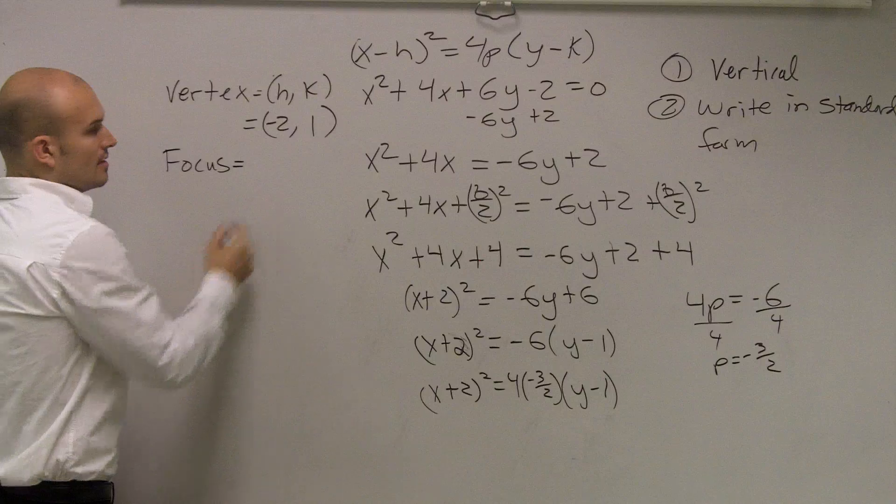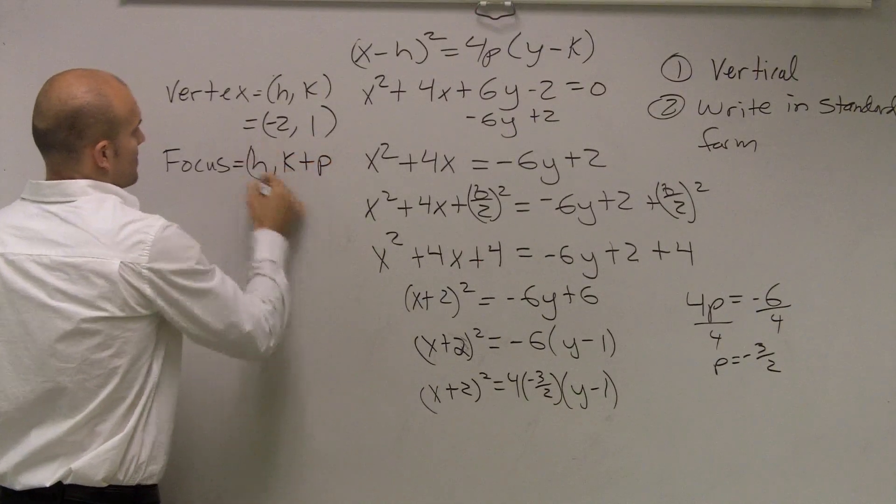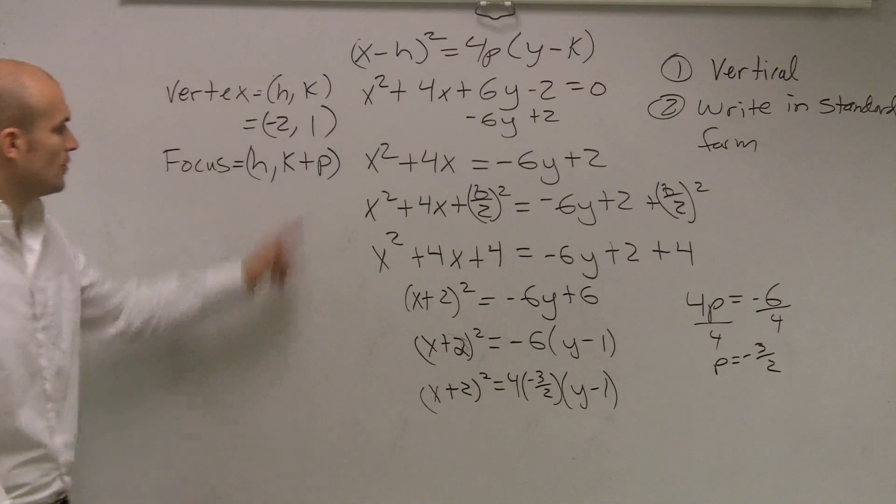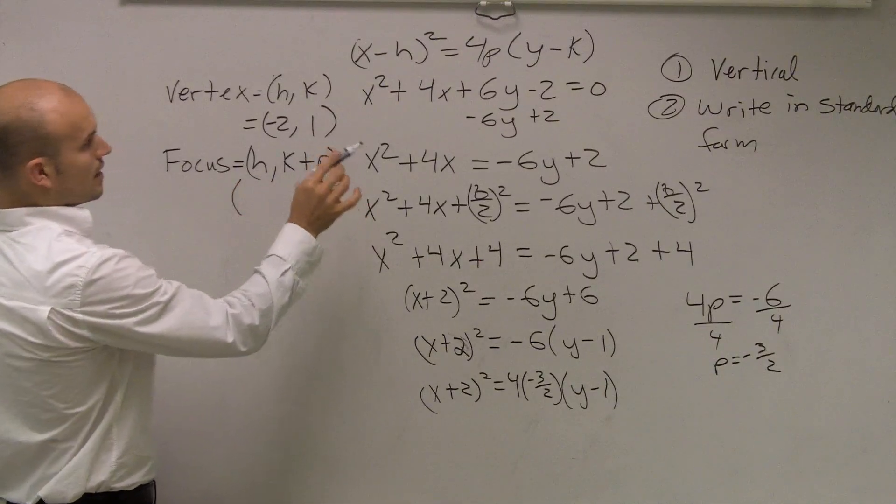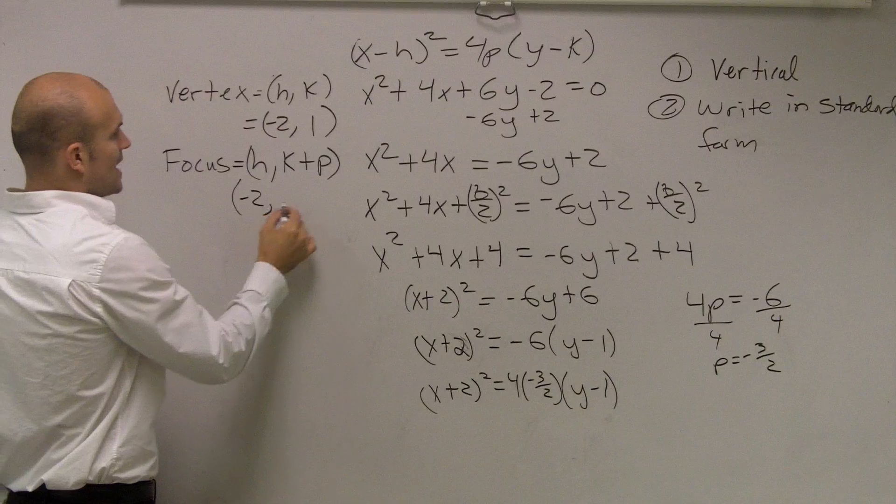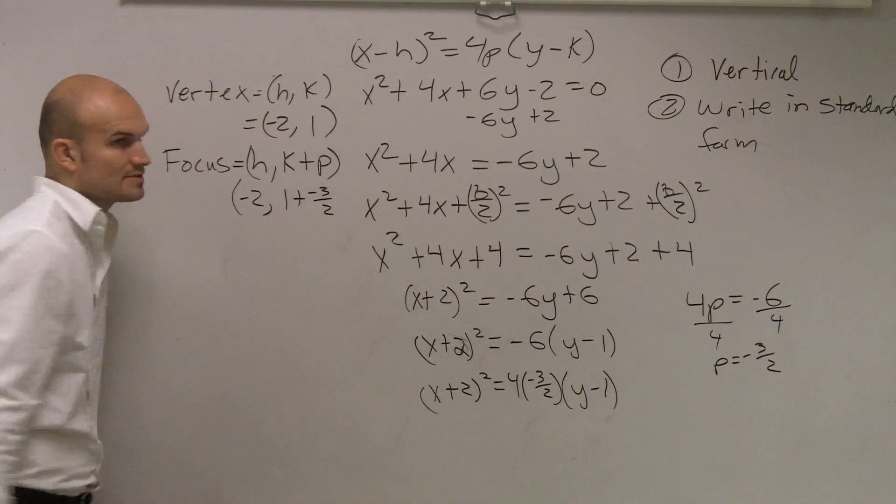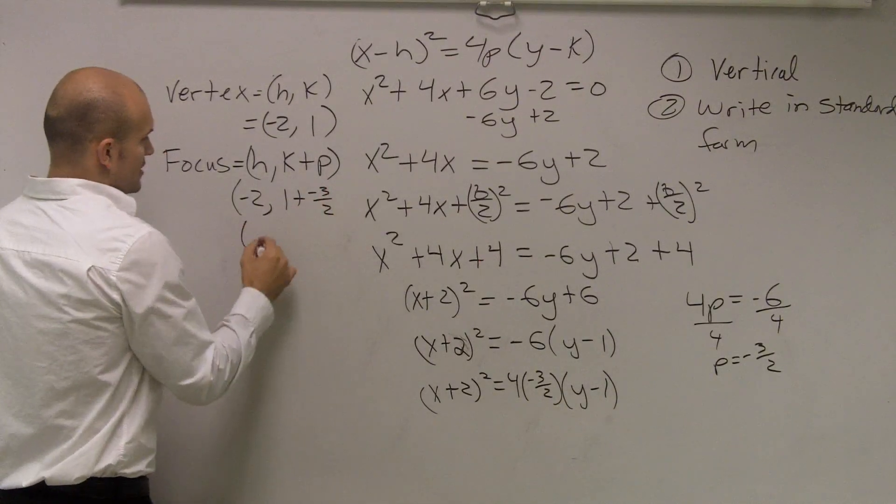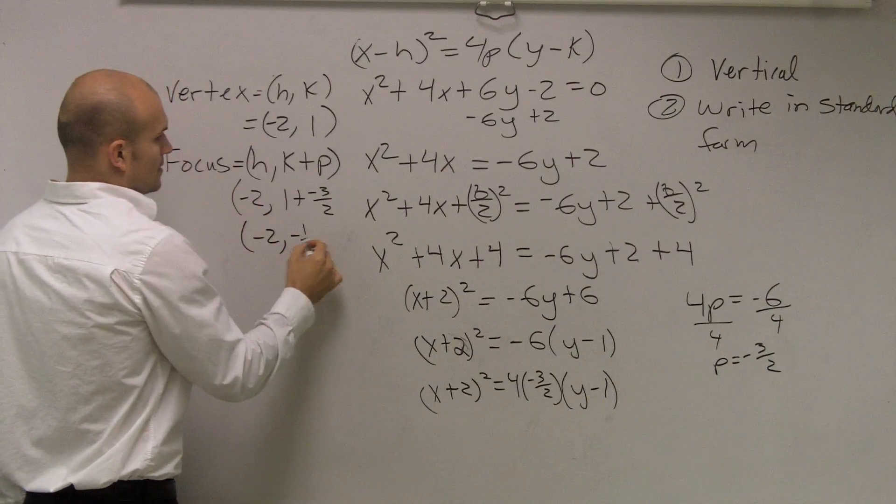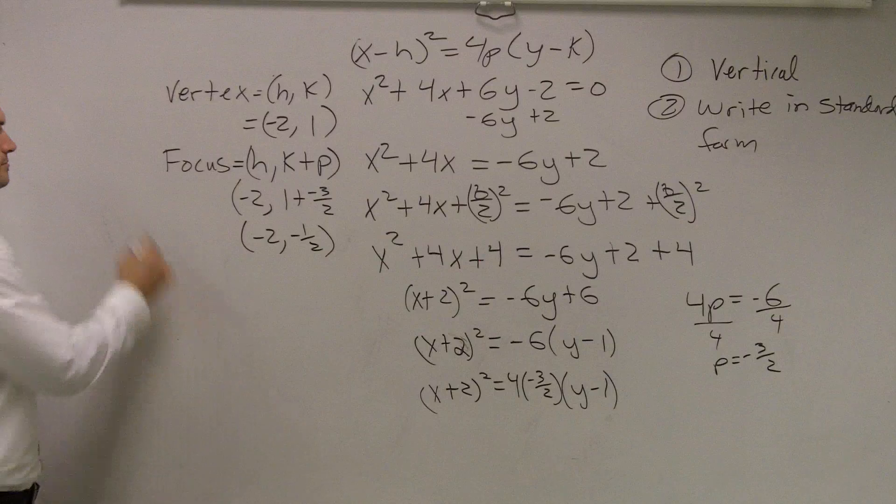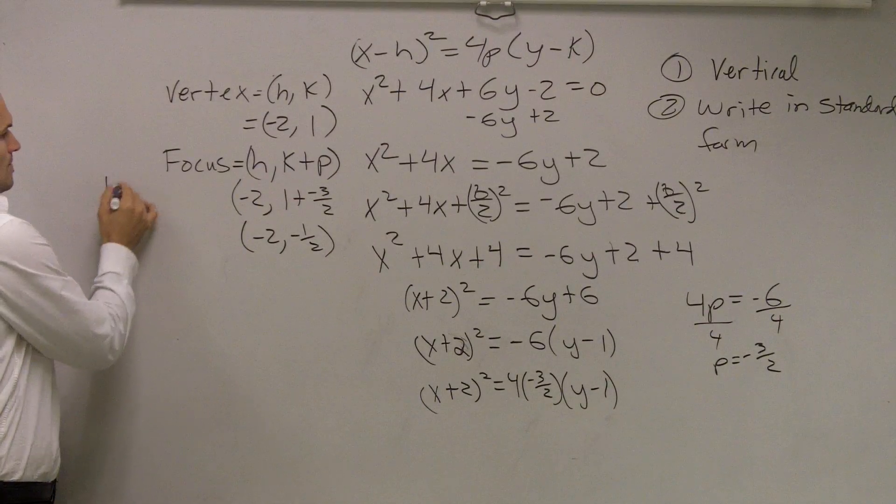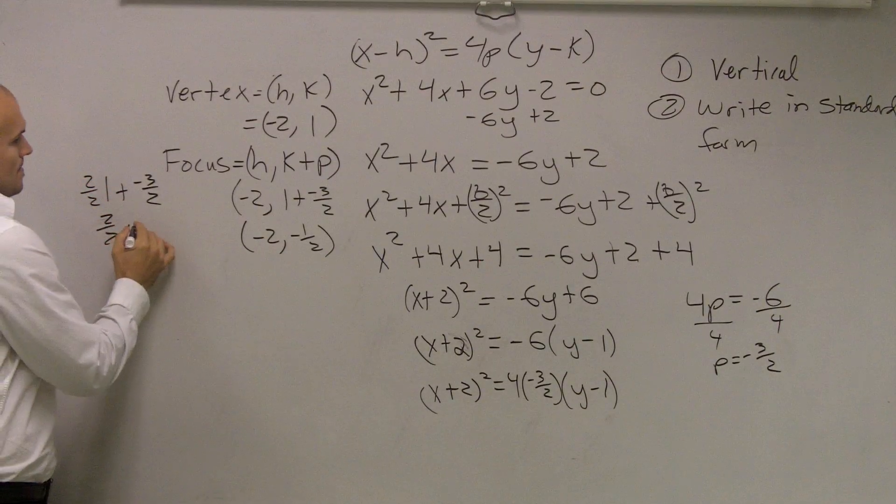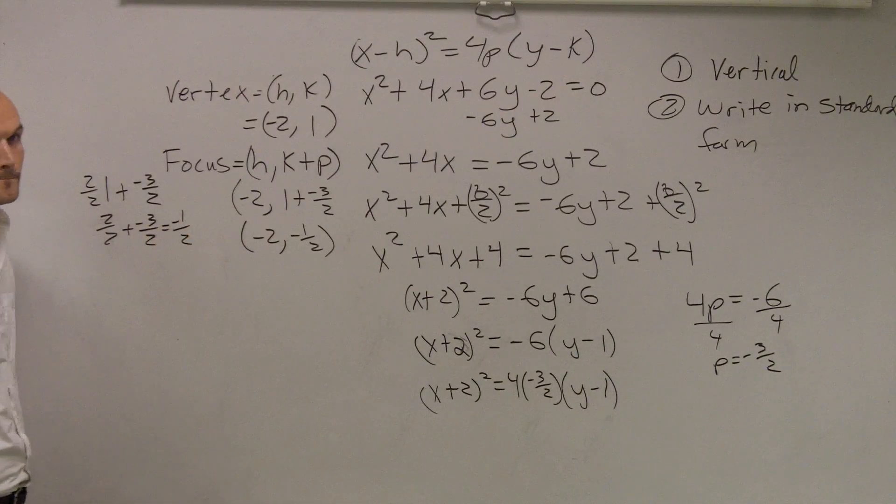So now we need to figure out the focus. Remember, the focus is h, comma, k plus p. So we look at this, and that is negative 2. So we have negative 2, comma, 1 plus a negative 3 halves, which would be negative 1 half when you combine those two terms. So therefore, my focus is negative 2, negative 1 half.